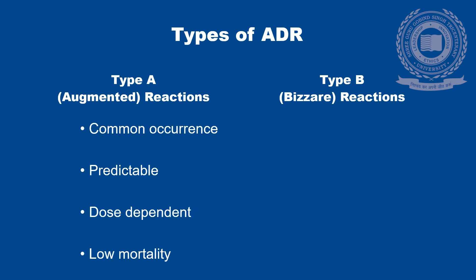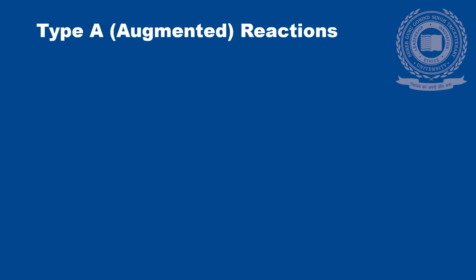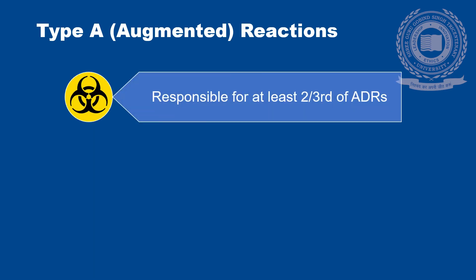Types of adverse drug reactions are broadly divided into two: Type A or augmented ADRs, and Type B or bizarre ADRs. Type A reactions are very commonly occurring, predictable and dose dependent, and carry a very low mortality rate. Type B or bizarre reactions are rarely occurring, unpredictable, carry genetic predisposition, and have a high mortality rate. Type A augmented reactions are responsible for at least two-thirds of all adverse drug reactions.